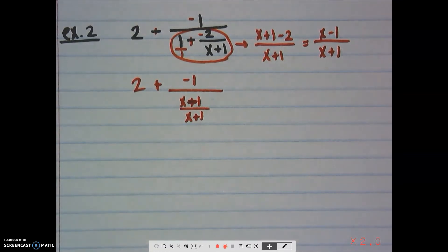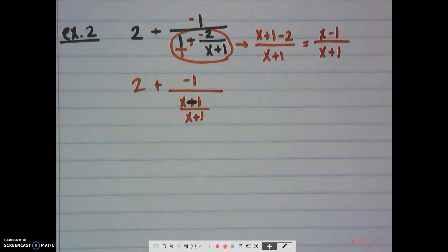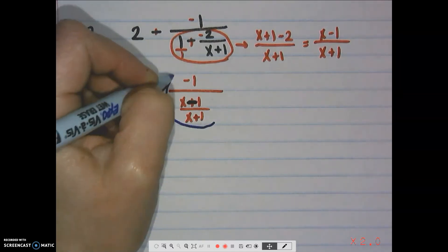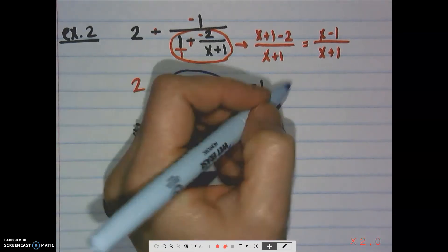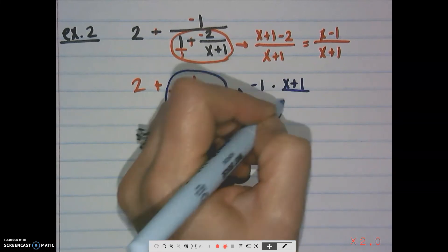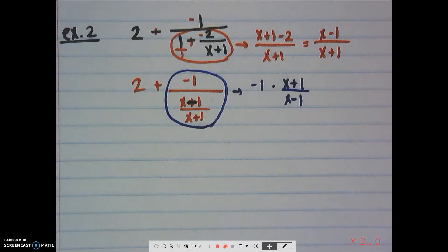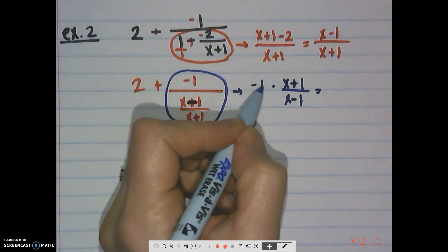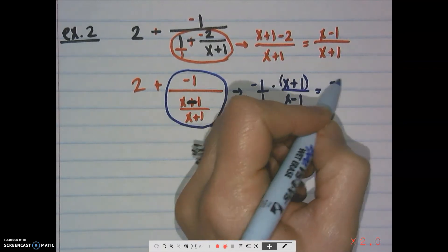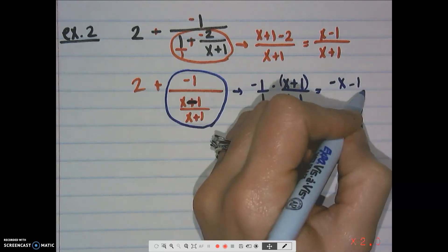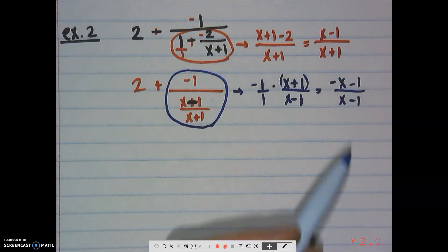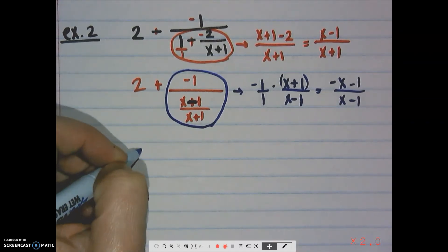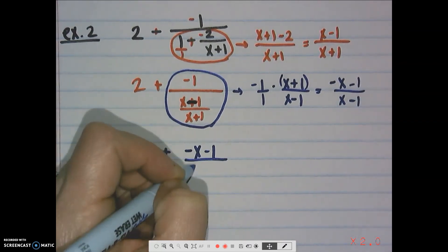Now we have 2 plus −1 divided by (x−1)/(x+1). Dealing with this division piece: when we divide, we flip the second fraction. So we have −1 times (x+1)/(x−1). Distributing the −1 into (x+1) gives us −x minus 1 over (x−1). That might look tempting to cancel, but those two expressions are not common at all.